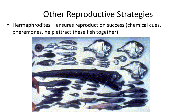Other reproductive strategies include hermaphroditism, where all individuals can produce both sperm and eggs. This allows any chance encounter between two organisms to result in both exchanging sperm and both reproducing, increasing the likelihood of having fit progeny.